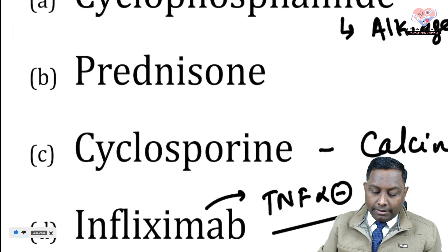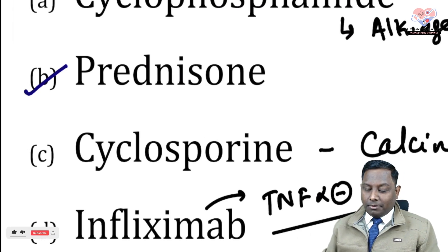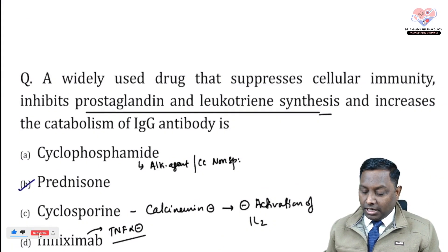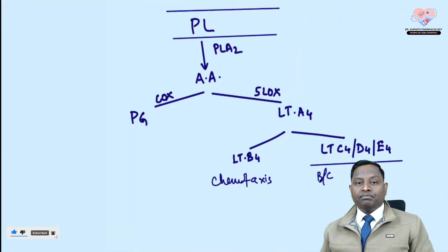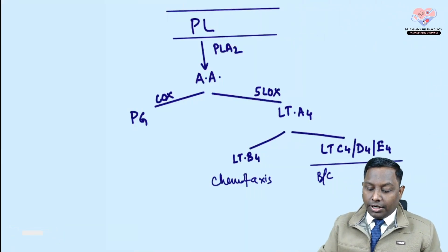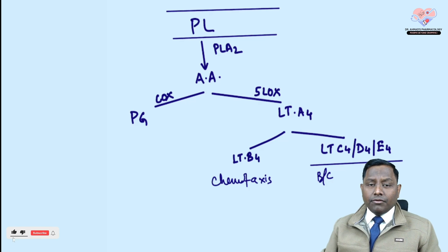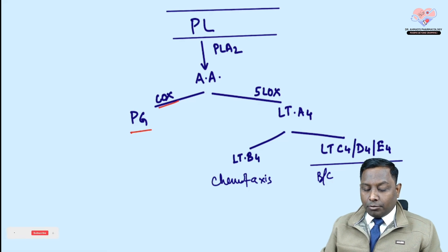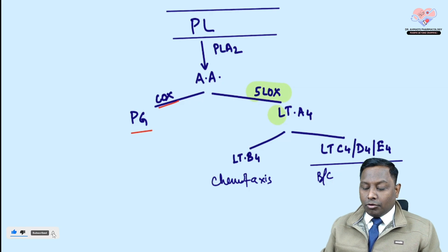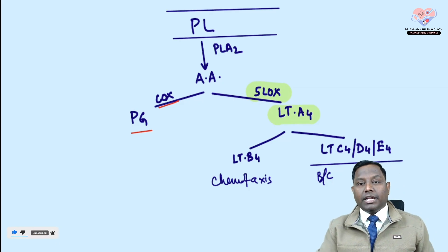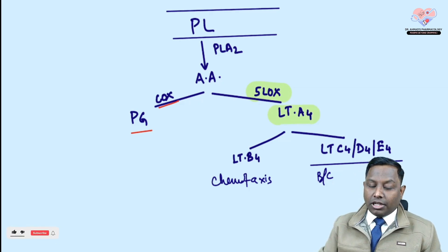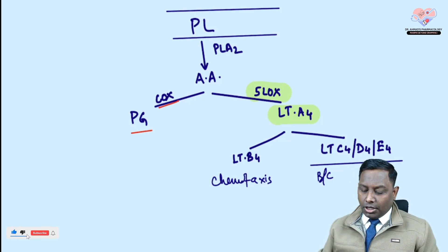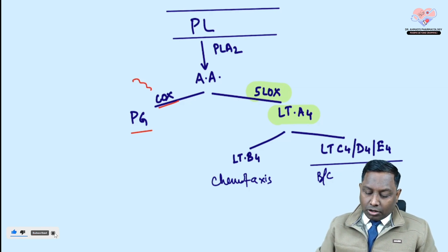The correct answer is prednisolone. Steroids work as follows: phospholipid is converted to arachidonic acid by phospholipase A2. Via cyclooxygenase, arachidonic acid is converted to prostaglandins. Via 5-lipoxygenase, it is converted to leukotrienes — leukotriene B4 for chemotaxis, and LTC4/LTD4 acting on bronchial smooth muscle causing bronchoconstriction.